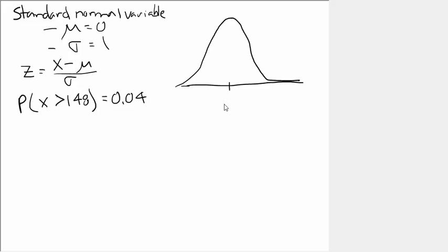We know we've got a population mean here. And let's see, this is, the variable 148 must be somewhere over here. And how do I know that? Well, it says the probability of a value being greater than that is quite small, 0.04. Which means this area here is 0.04.